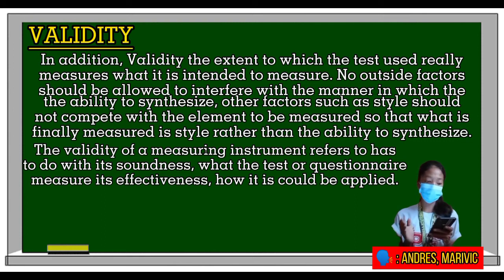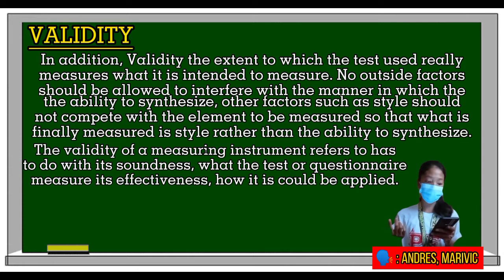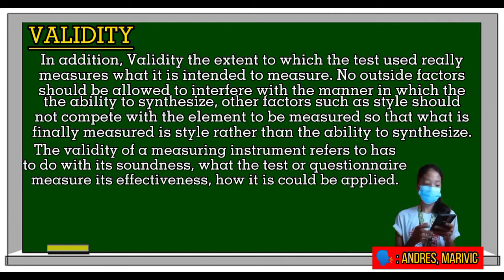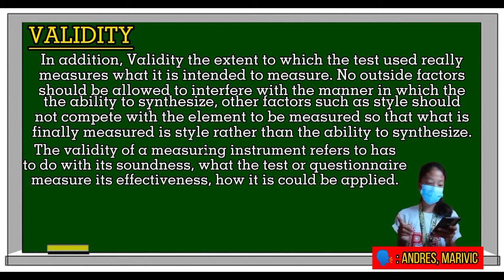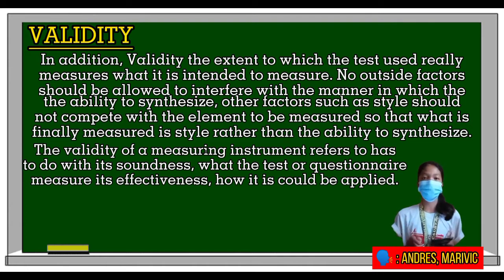For instance, in measuring the ability to synthesize, other factors such as style should not compete with the element being measured, so that what is finally measured is the ability to synthesize and not style. The validity of a measuring instrument refers to its soundness — what the test or questionnaire measures and its effectiveness in how it can be applied.